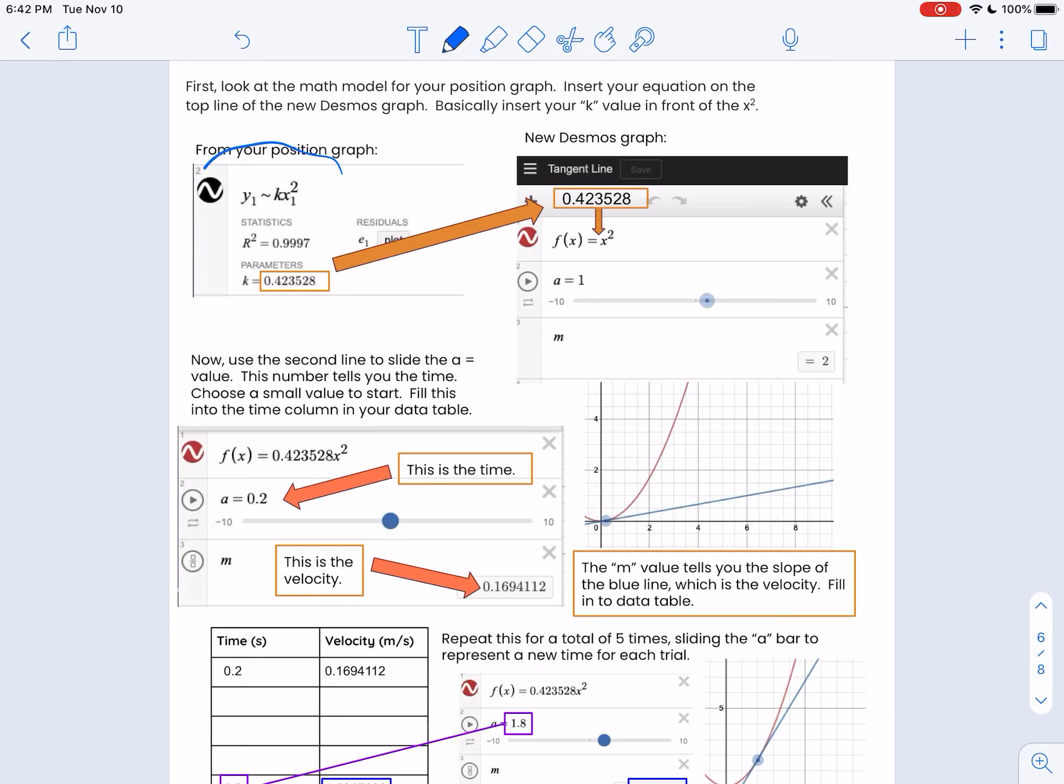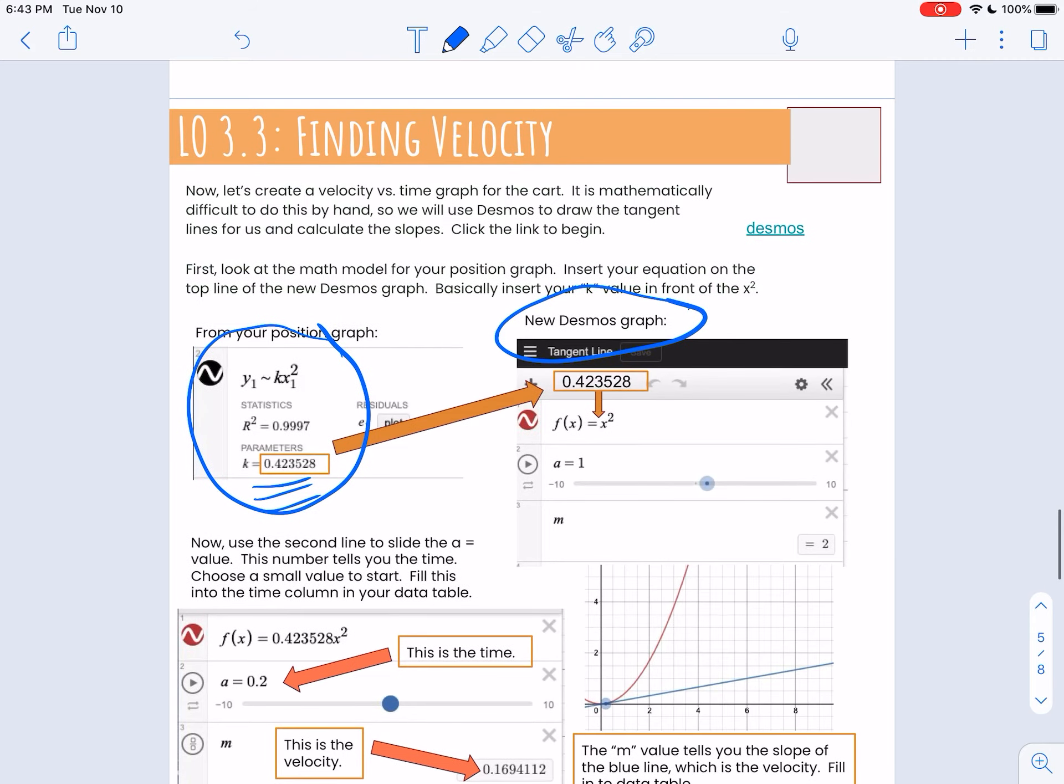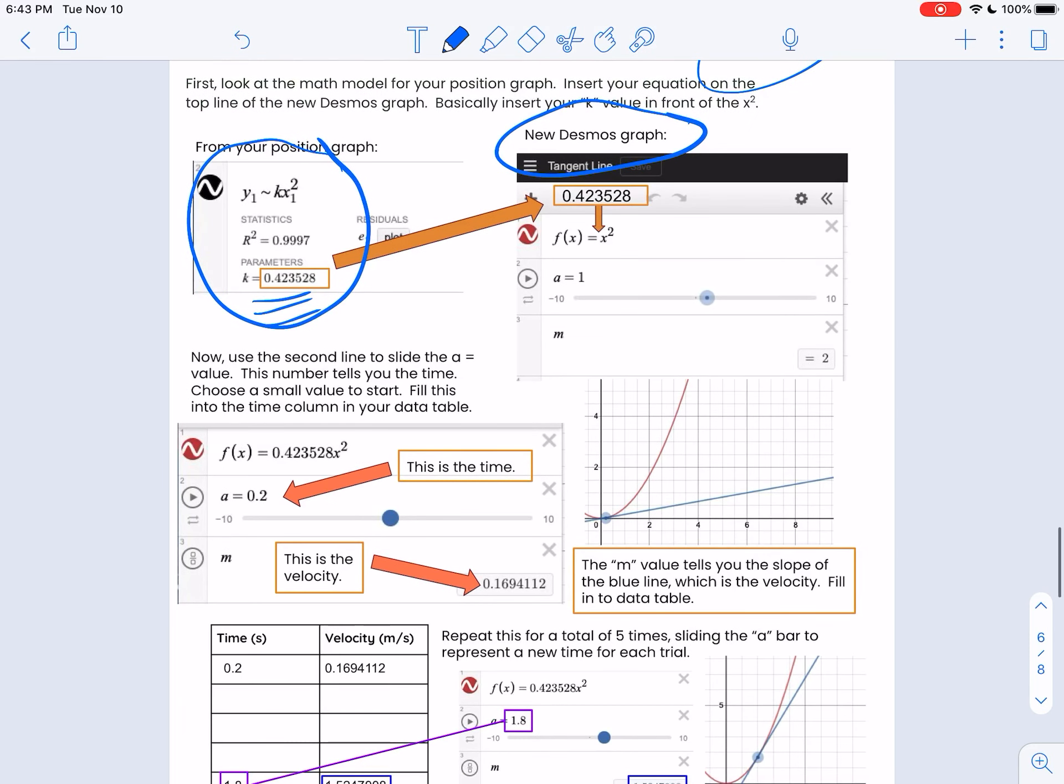So the first thing you want is this equation from your position graph. You have that constant value. And then when you open up the link here, it's going to give you this equation. You need to insert your constant right there. So your new thing will say like f(x) equals whatever is your constant, x squared. So that's how the top line should look now, because that's going to make this parabola what your parabola is in your other graph.